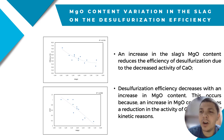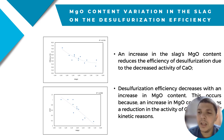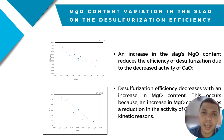Here we have the effect of MgO content variation in the slag on desulfurization efficiency. The first graph shows that an increase in MgO content in the slag reduces desulfurization efficiency due to a decrease in lime activity. The second graph confirms that desulfurization efficiency decreases with an increase in MgO content, because an increase in MgO content causes a reduction in lime activity for kinetic reasons.